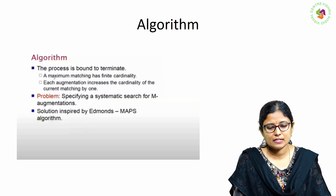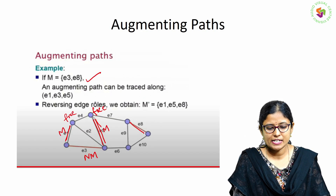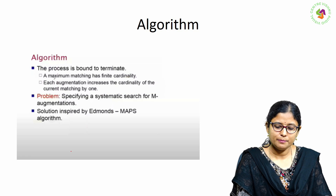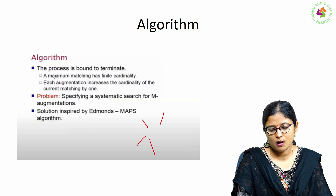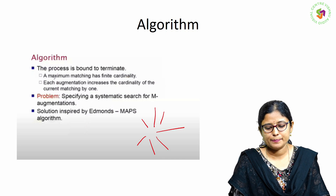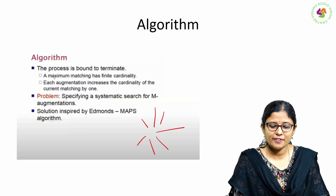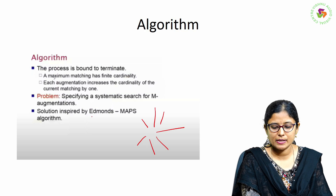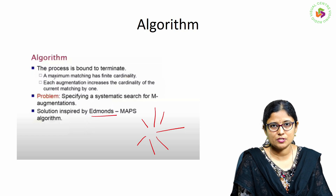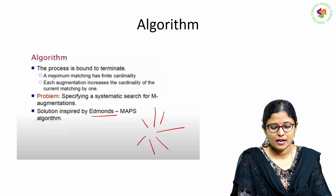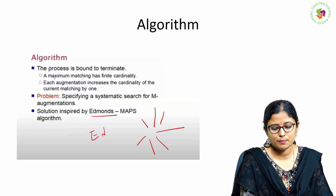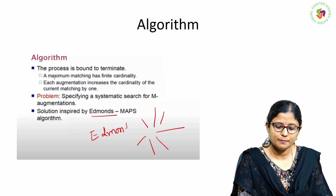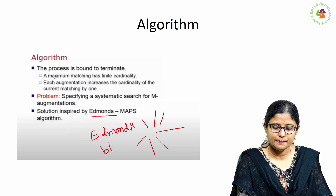The problem with this algorithm is that for finding the augmenting path in a complex graph it takes a very long time. The problem is specifying a systematic search for M-augmentations. This problem can be overcome by the Edmonds blossom algorithm, which was found by the researcher named Edmonds. The problem of specifying a systematic search of M-augmentations can be solved using the Edmonds blossom algorithm.